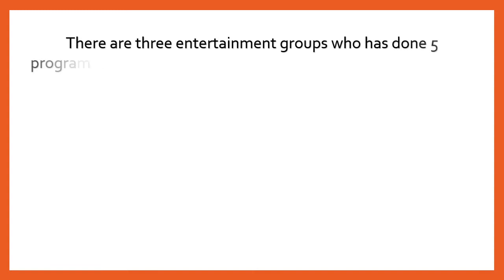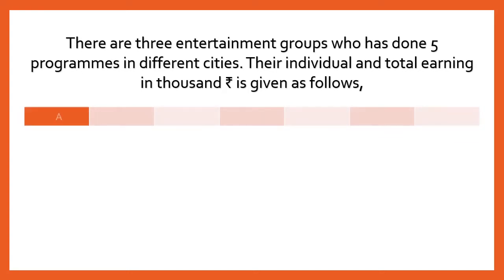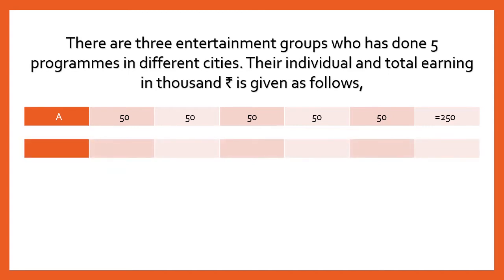I'm taking an example: there are three entertainment groups who have done five programs in the last month in different cities. Group A earned 50,000 each program, totaling 250,000. Group B earned 30, 40, 50, 60, and 70 thousand rupees, also totaling 250,000. The total earnings of both groups are the same.